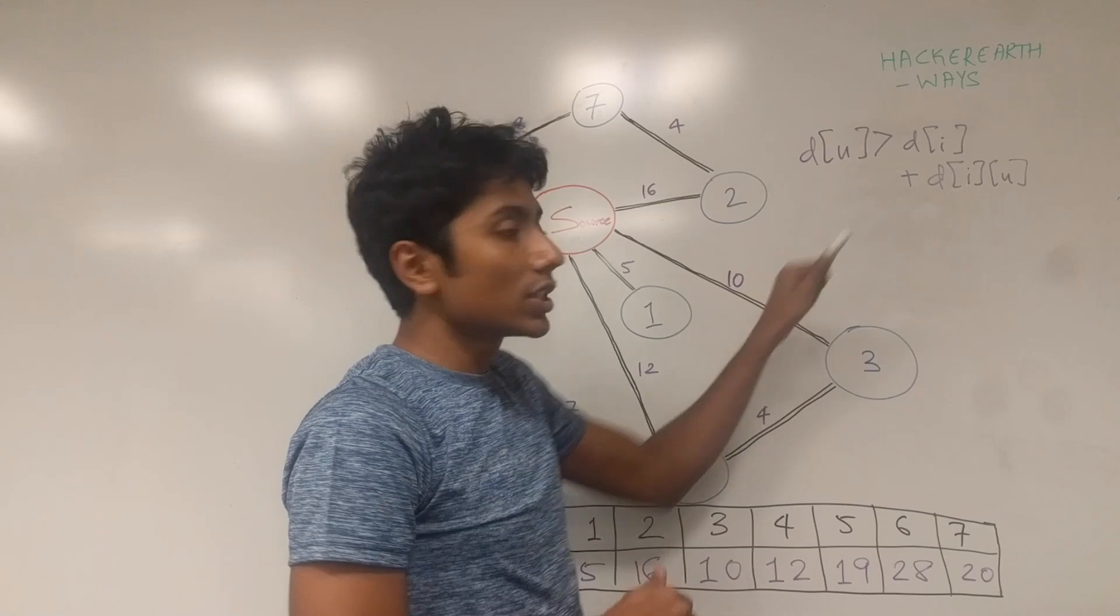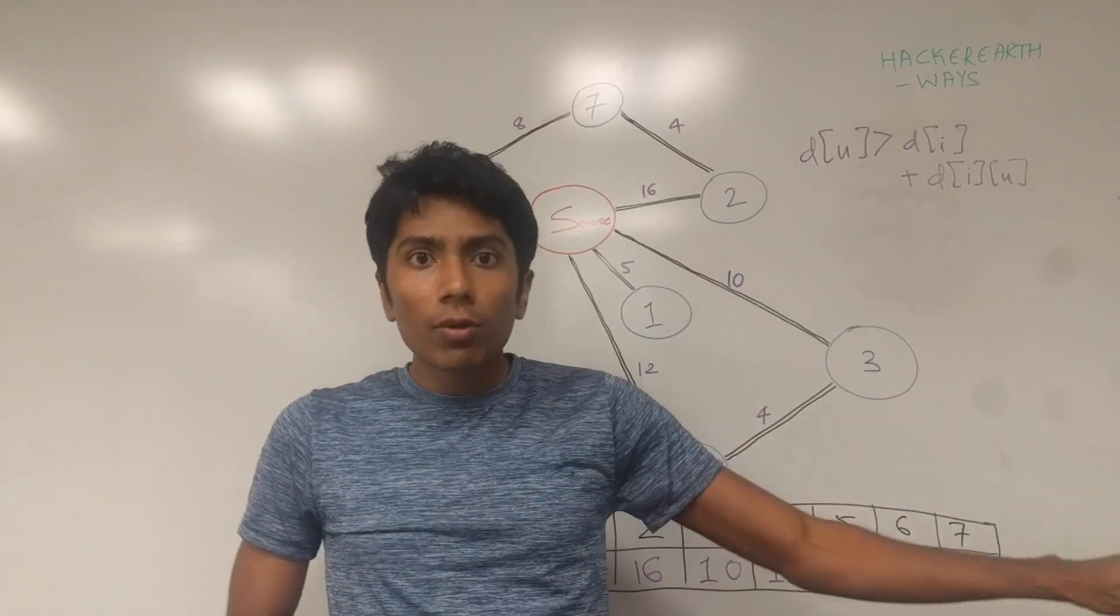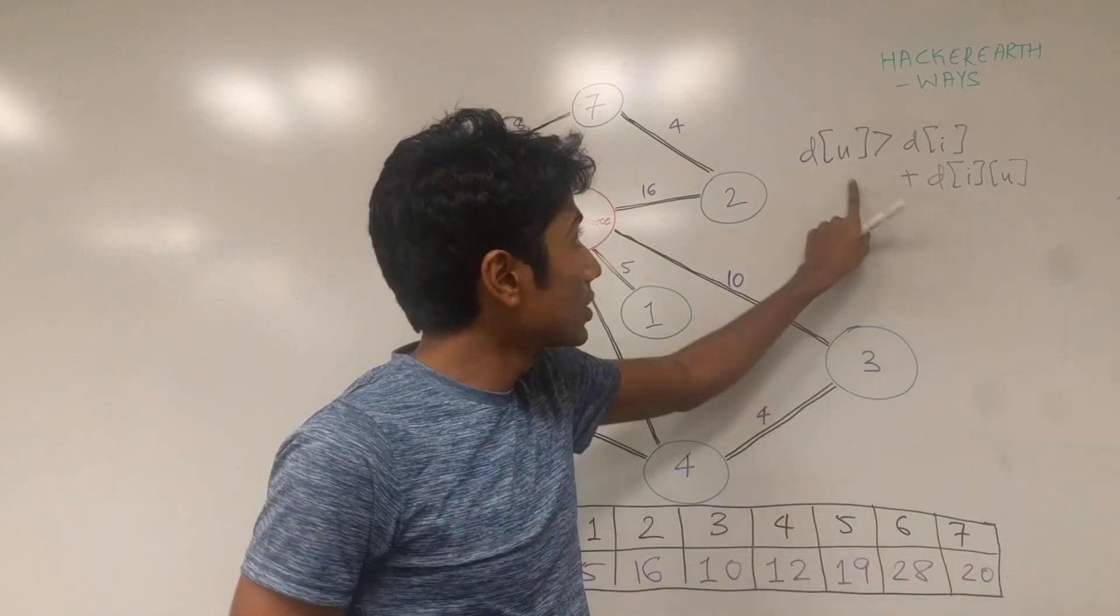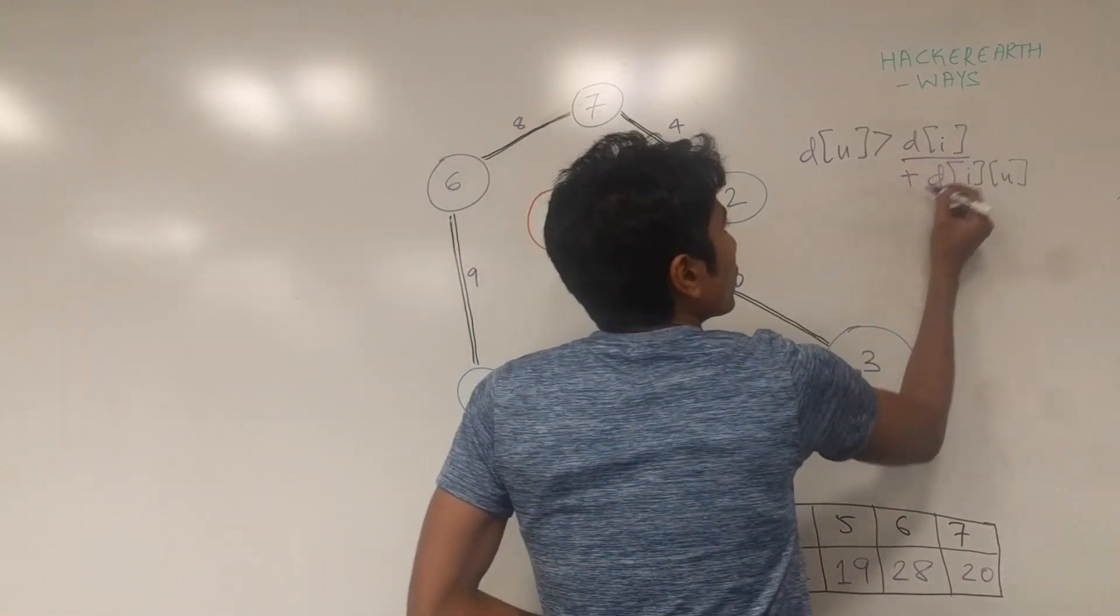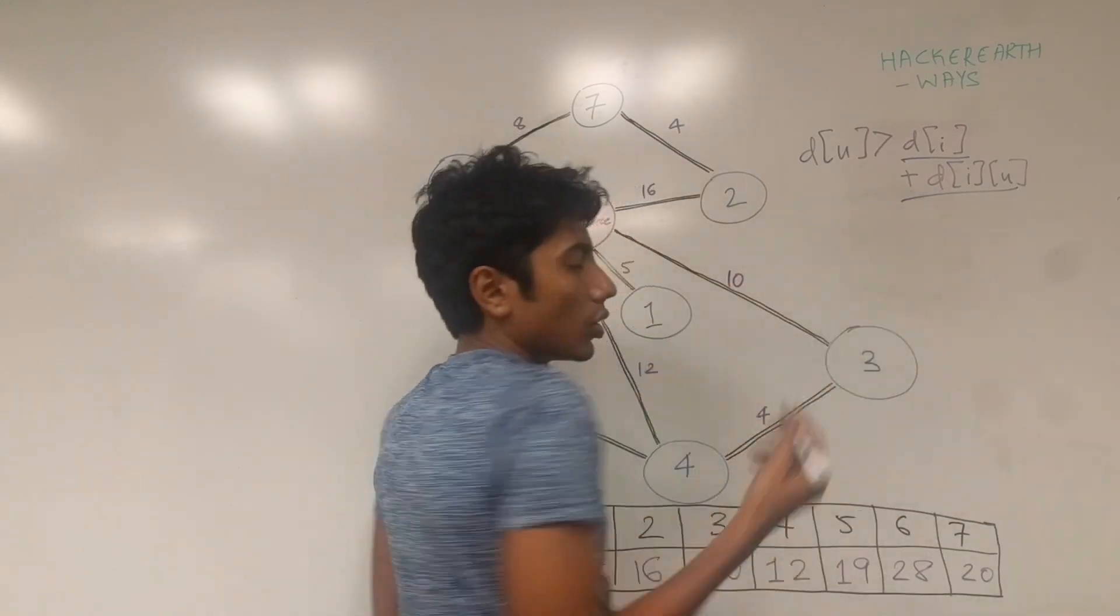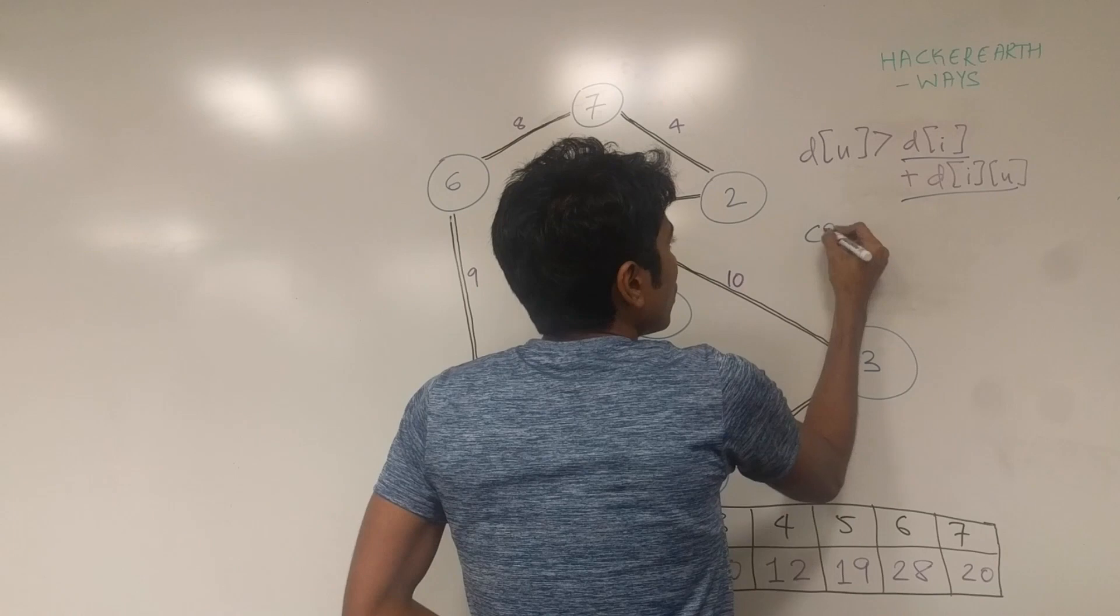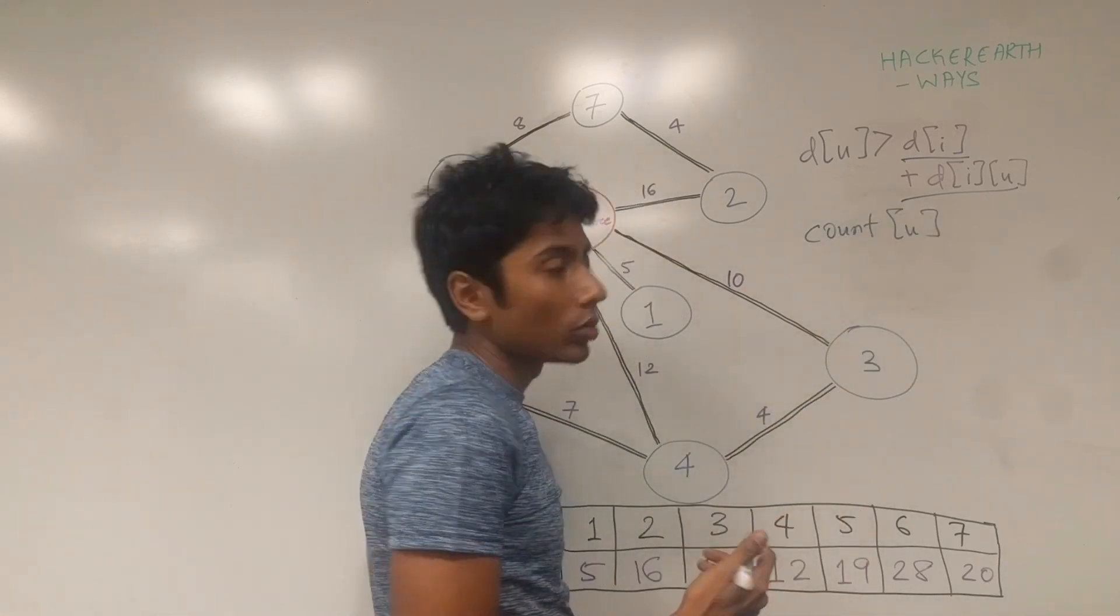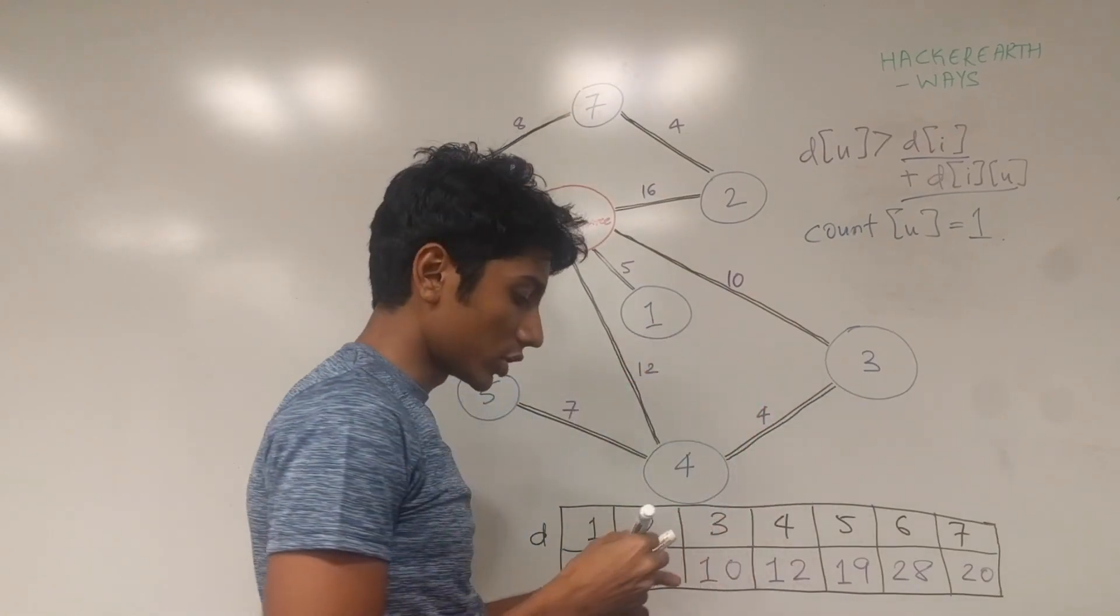But this condition is nice. If this occurs we discard all our previous ways to get to city U and just take this particular way. There is just one way now. So let's store the number of ways that we can get to U in a count array. A count of U. This will be set to 1. That's one condition.